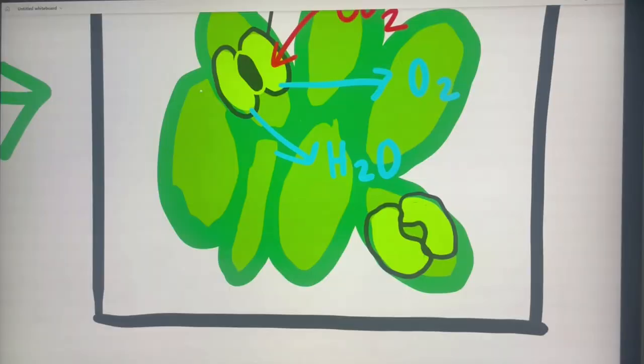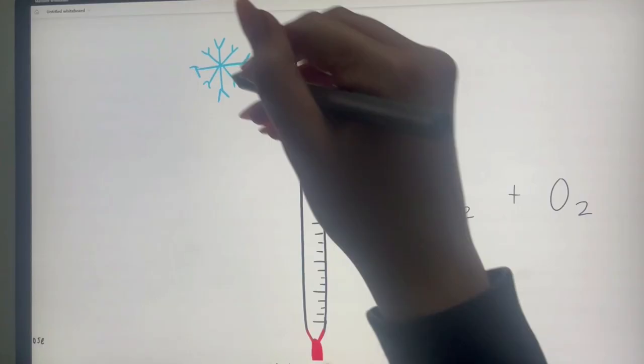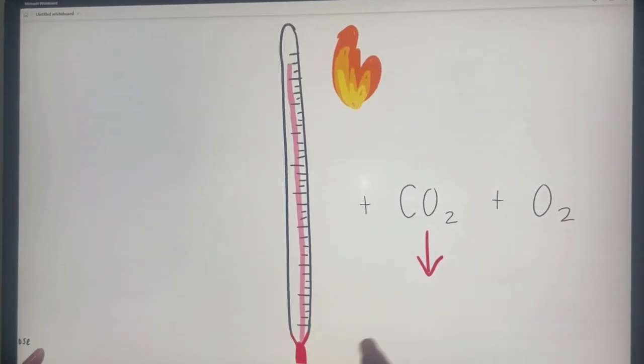When the stomata closes at higher temperatures and drier conditions in order to reduce water loss by evaporation, the O2 concentration from photosynthesis builds up, thus increasing photorespiration.